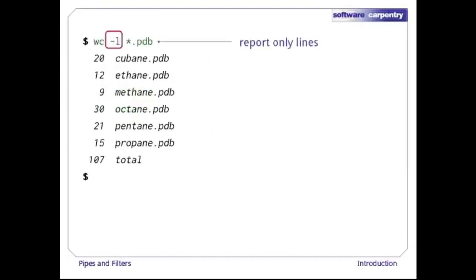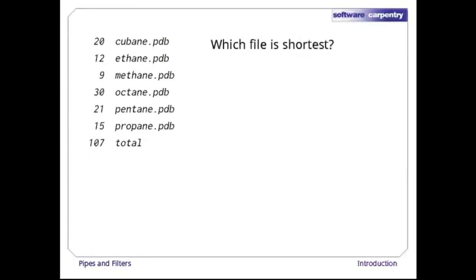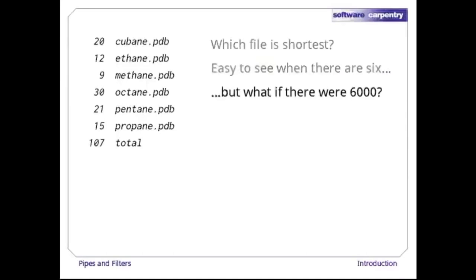If we run 'wc -l' instead, our output shows only the number of lines per file. We can use -w to get only the number of words, or -c to get only the number of characters. Now, which of these files is shortest? It's an easy question to answer when there are only six files, but what if there were 6,000? That's the kind of job we want a computer to do.